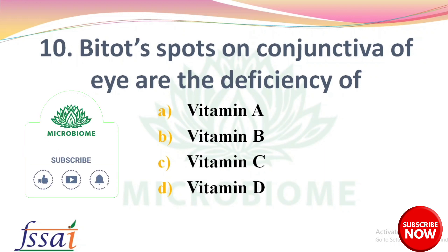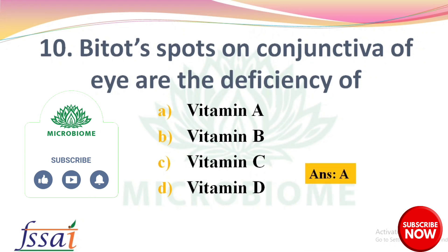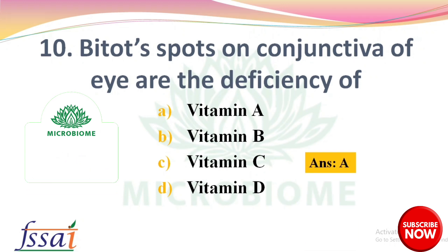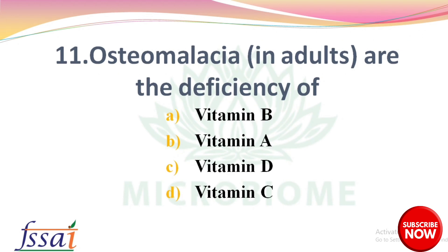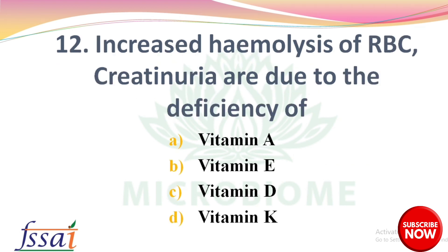Next question: Bitot's spots on conjunctiva of the eye is a deficiency of — options: vitamin A, vitamin B, vitamin C, vitamin D. The right answer is option A, vitamin A. Next, osteomalacia in adults is the deficiency of — options: vitamin B, vitamin A, vitamin D, vitamin C. The right answer is option C, vitamin D.